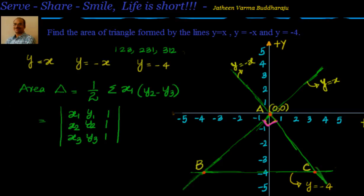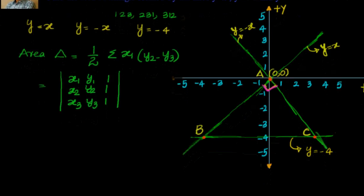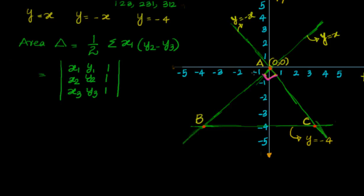So first what we will do, we will solve for coordinates of A, B, C. First, A is nothing but intersection of y equal to minus x and y equal to x. You can see very clearly for those two lines the point of intersection will be the origin. So I can say A is 0 comma 0.